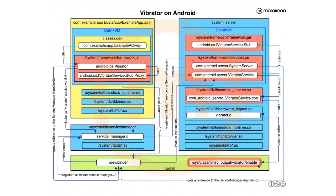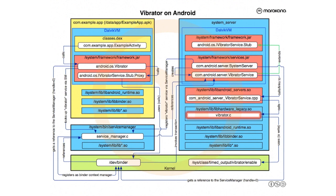The vibrator HAL does a simple write to a sysfs driver entry — literally writing a long value indicating how long to vibrate, then writing to turn off. This is just simple IO to turn the vibrator on or off. Better approaches exist, but the haptic feedback world is riddled with patents, so this is what AOSP can provide out of the box. That's what the Vibrator stack looks like.